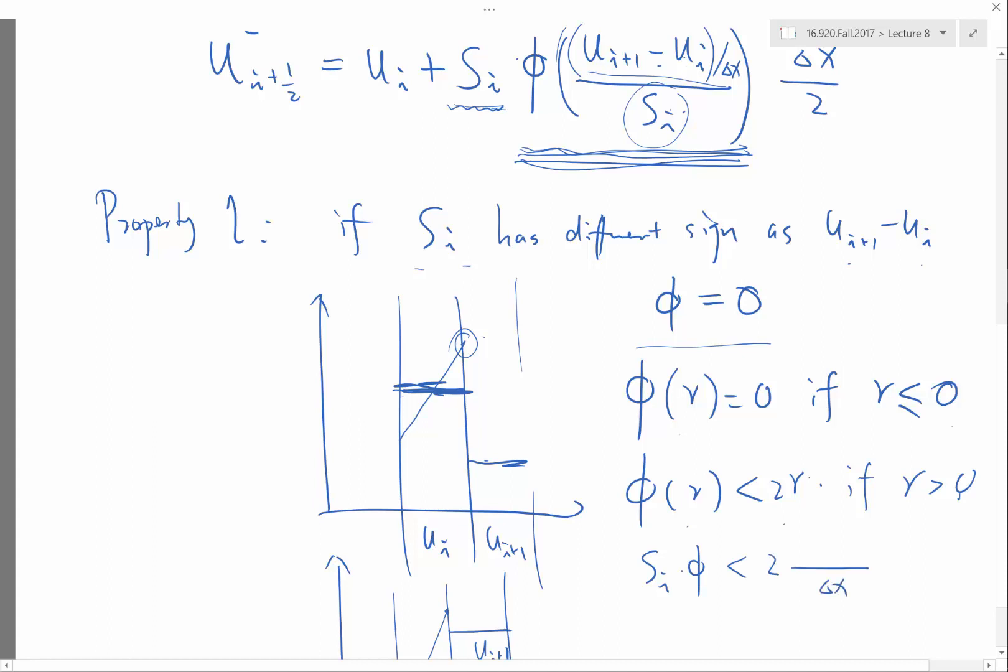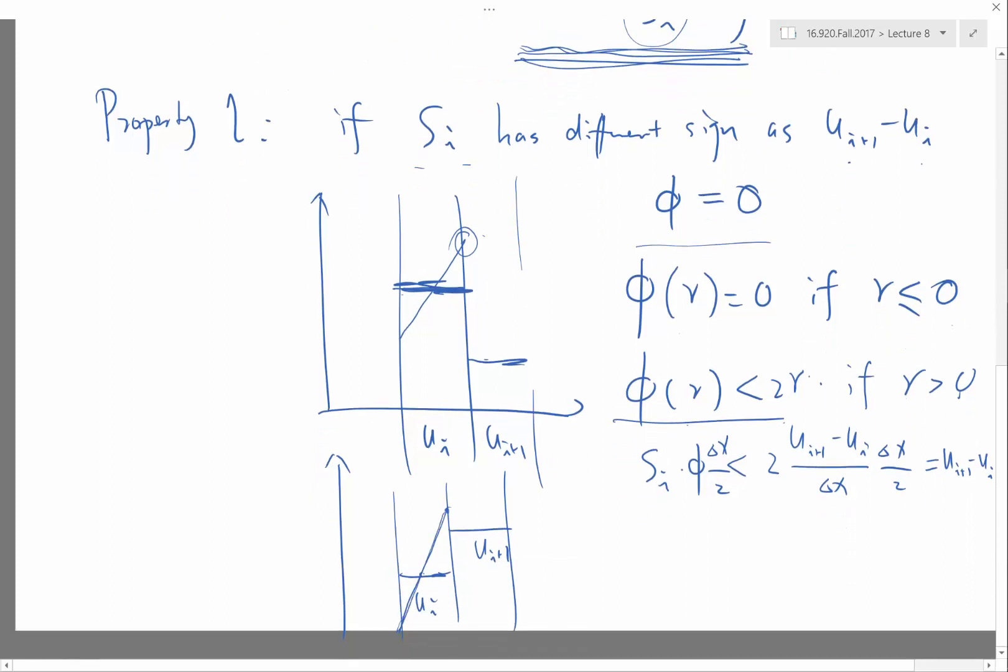u_{i+1} minus u_i divided by delta x. And because I'm multiplying this by delta x over 2, that's going to get me exactly u_{i+1} minus u_i. So this criterion ensures that the overshoot in the same direction should never happen.